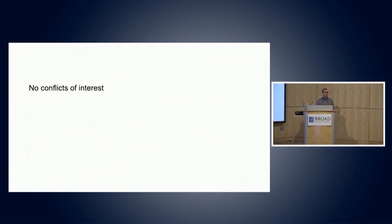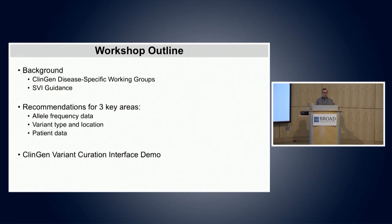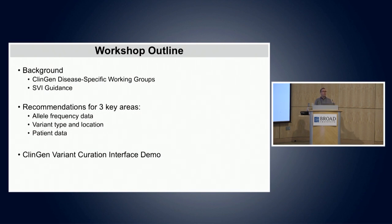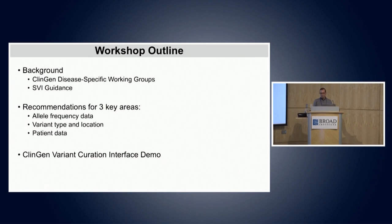I have no conflicts of interest. Going through the first part of the talk, I'll give a little background on the ACMG guidelines, and then dive more deeply into them — looking specifically at allele frequency data, variant type and location, and patient data, and how to use those three big buckets of data within variant interpretation.